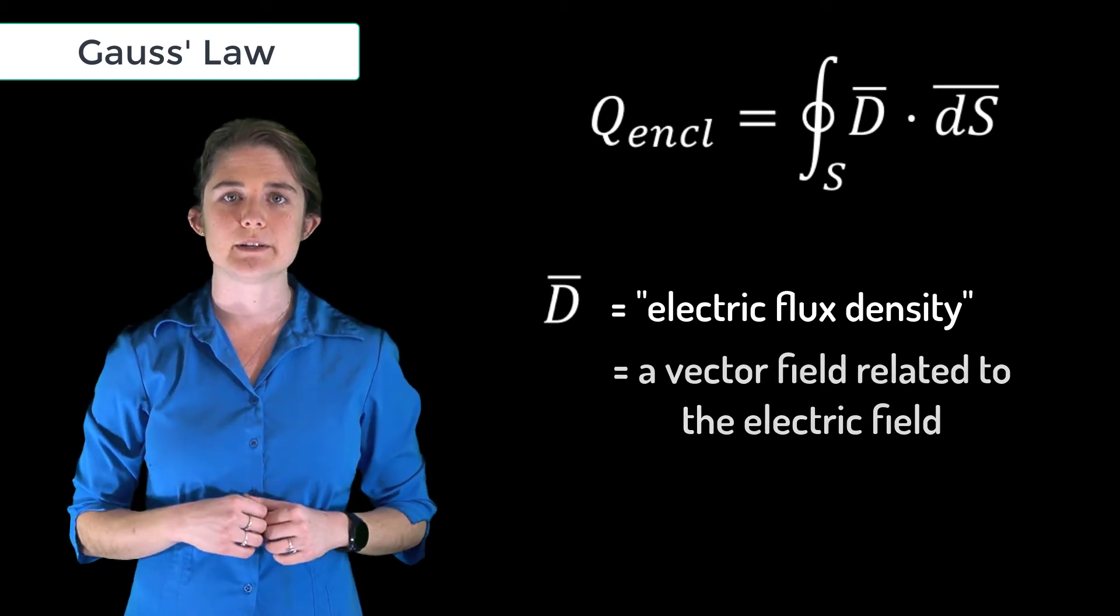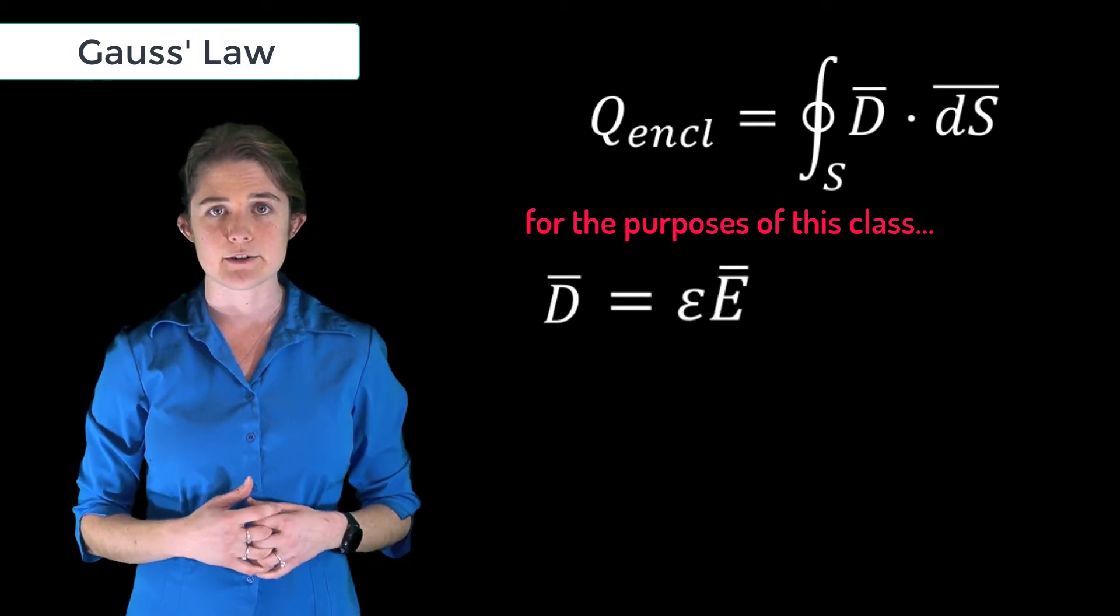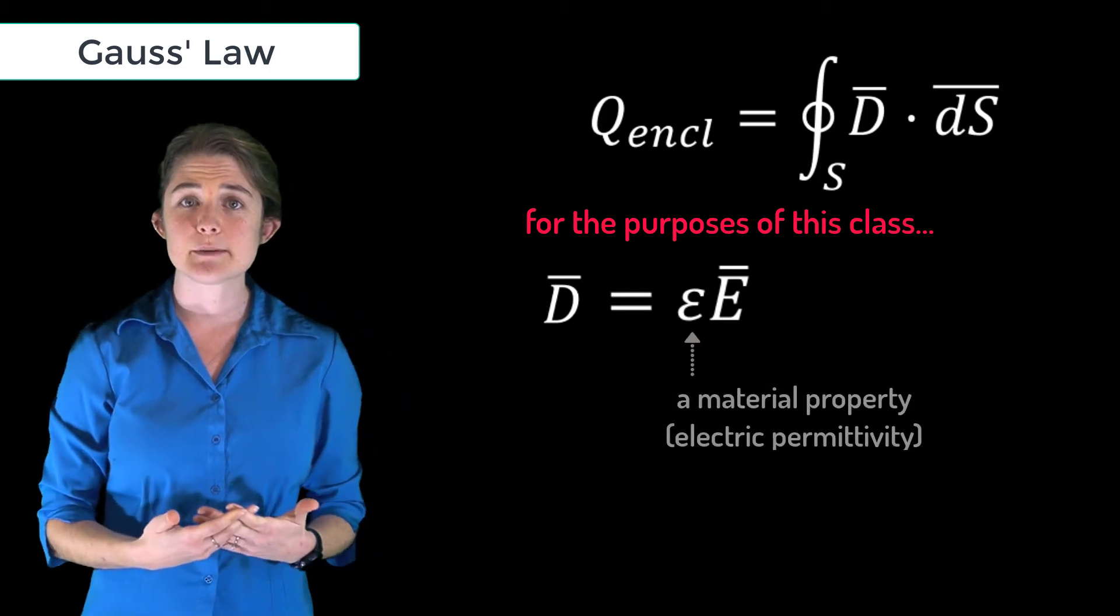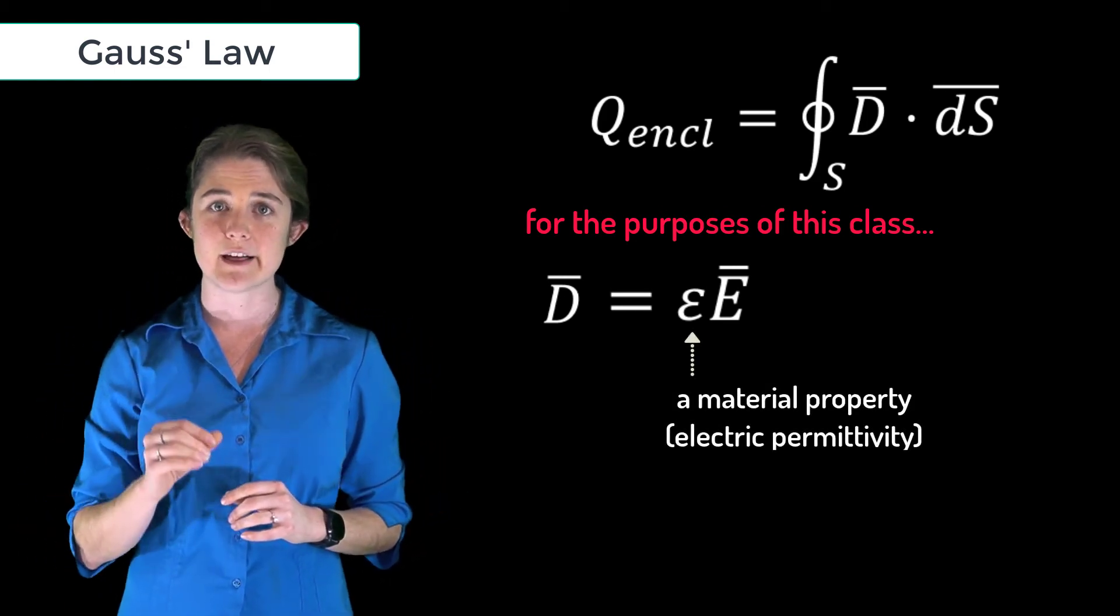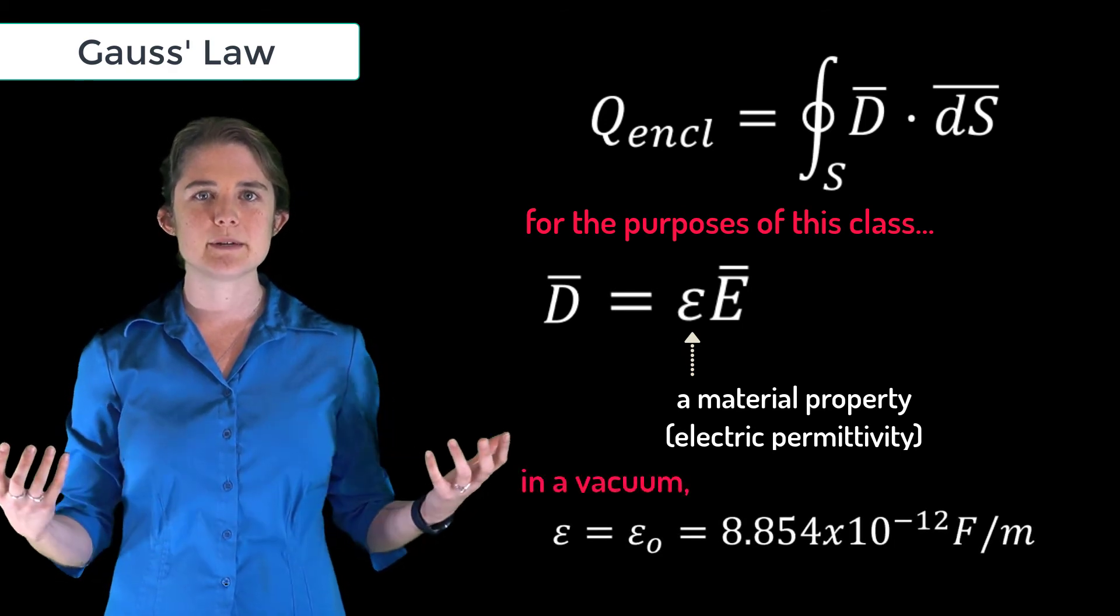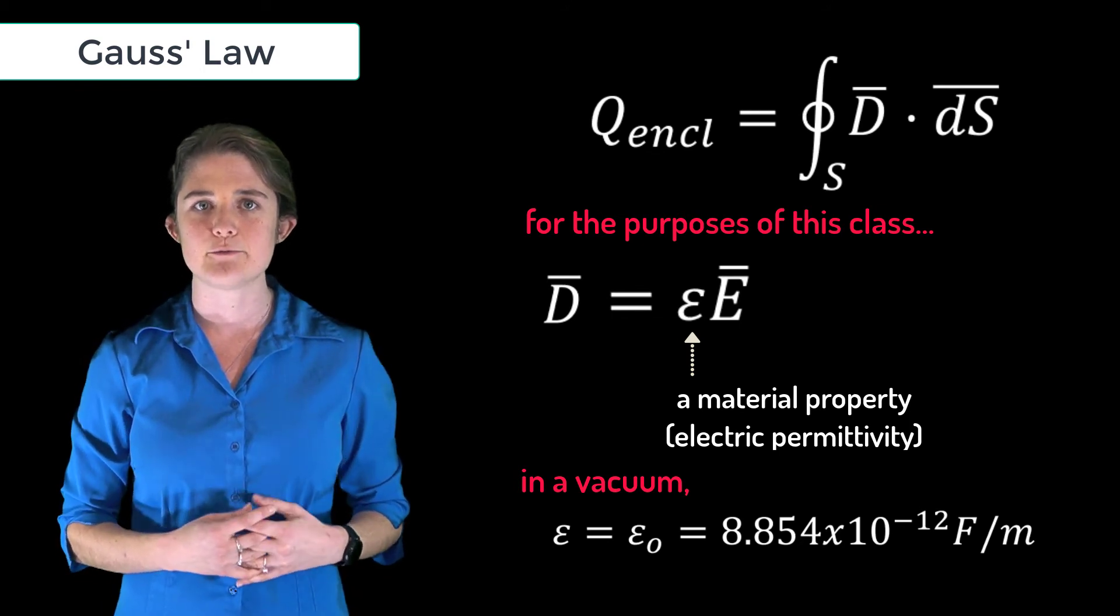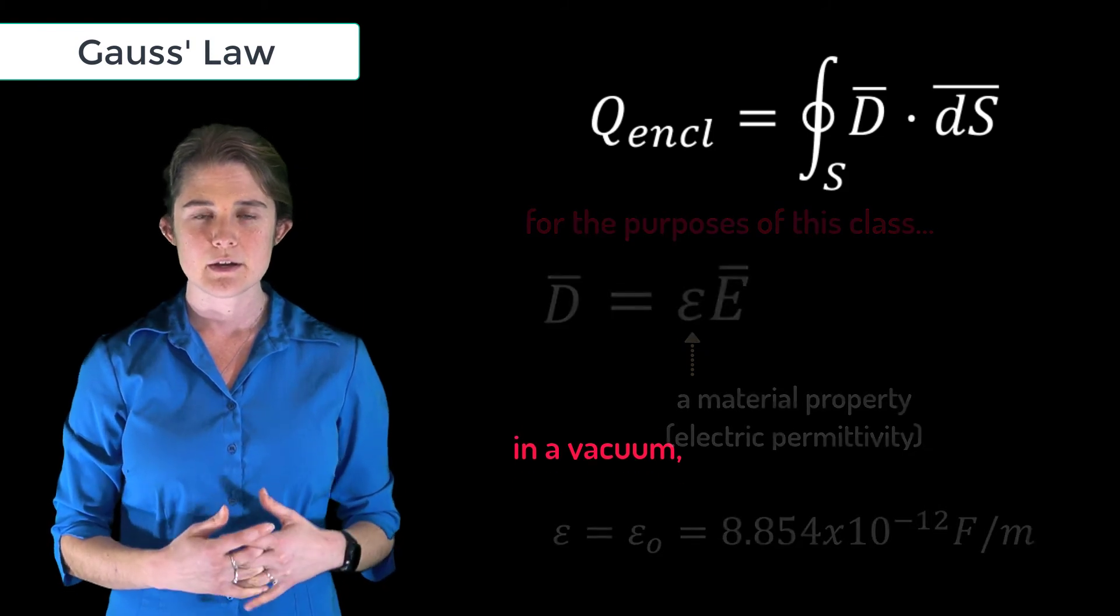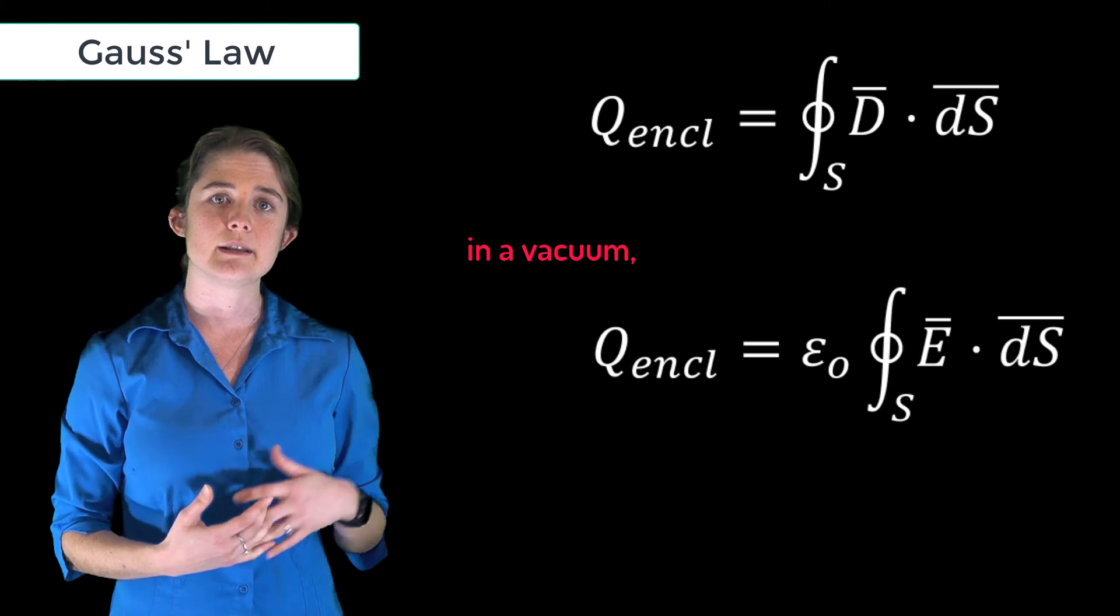For the purposes of this class, we will use a direct scaling factor D equals epsilon E. Epsilon is a material property called electric permittivity, which we'll talk about a lot more later in this class. In a vacuum, the electric permittivity is the physical constant epsilon naught, which is equal to 8.854 times 10 to the negative 12 farads per meter. So for vacuum conditions, Gauss's Law could also be written like this.